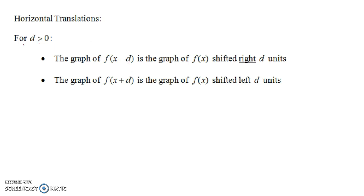Now let's look at horizontal translations. For some positive number d, the graph of f(x − d) is the same thing as the graph of f(x) only shifted right d units. If we're given some formula for f(x) and we replace all of the x's in that formula with x minus d, then we get the graph of f(x − d), and that'll be the same as the graph of f(x) only shifted right d units. And it's kind of weird — you have a negative, and it ends up shifting to the right, which is almost opposite of what you would think. And the graph of f(x + d) is the same thing as f(x) only shifted left d units.